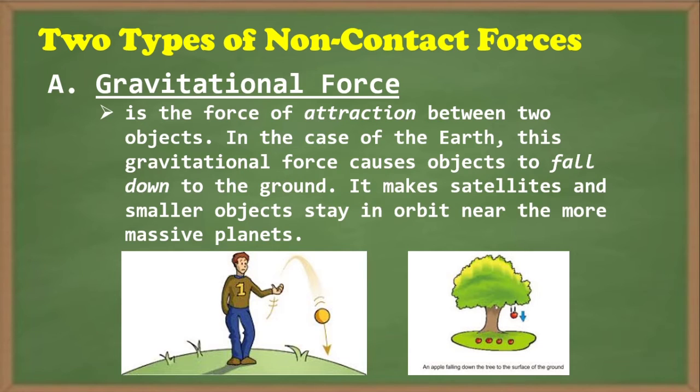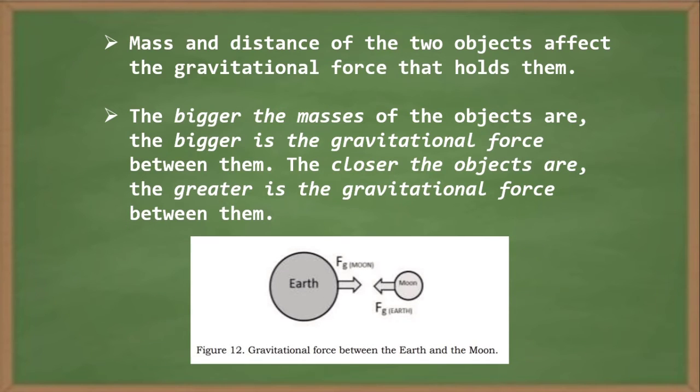And there are two types of non-contact forces. Letter A, gravitational force is the force of attraction between two objects. In the case of the Earth, this gravitational force causes objects to fall down to the ground. It makes satellites and smaller objects stay in orbit near the more massive planets. The mass and distance of the two objects affect the gravitational force that holds them. The bigger the masses of the objects are, the bigger is the gravitational force between them.